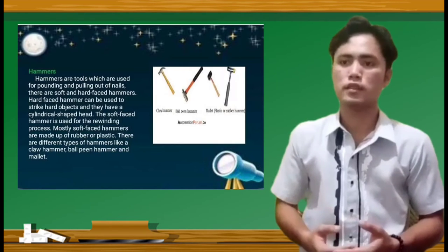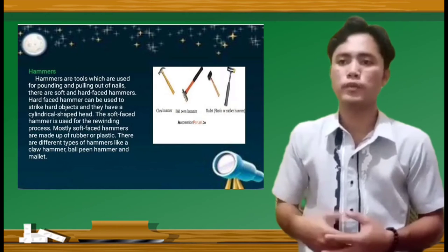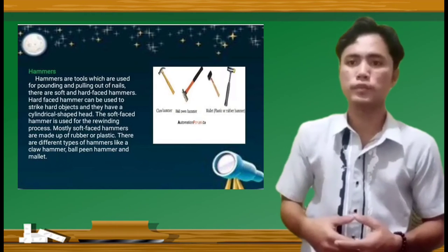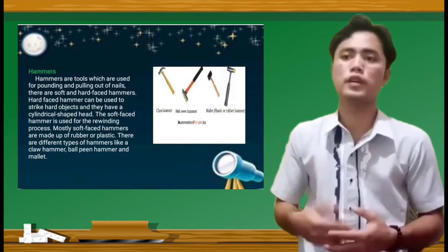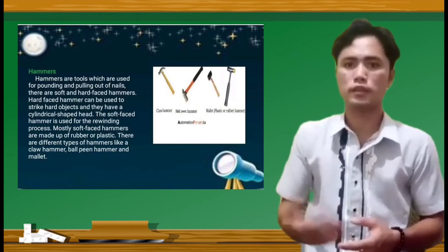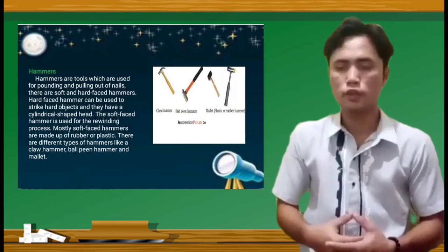Mostly soft face hammers are made up of rubber or plastic. There are different types of hammer like claw hammer, ball peen hammer, and mallet, etc.